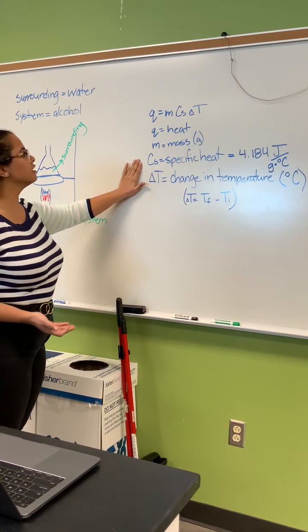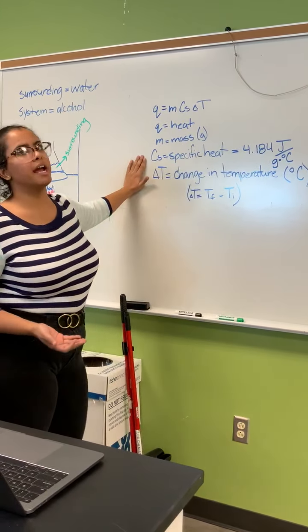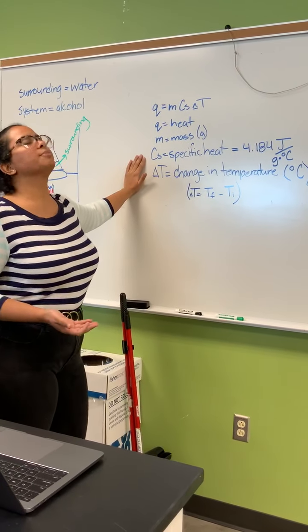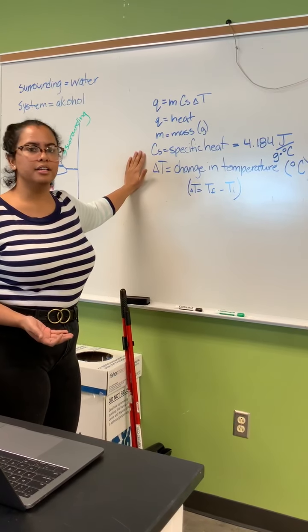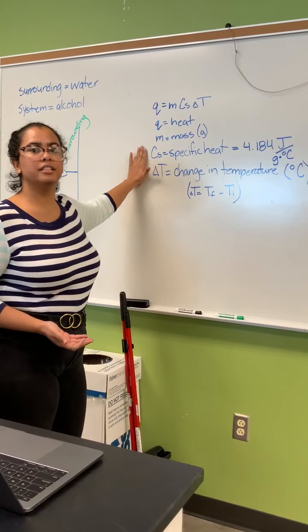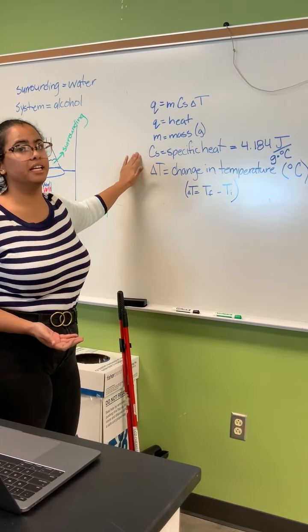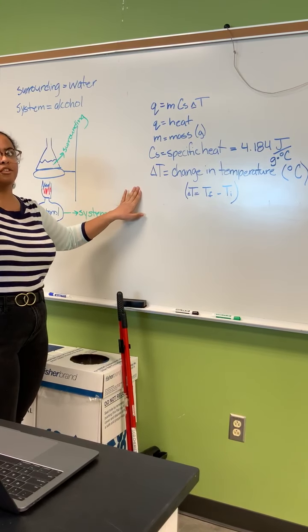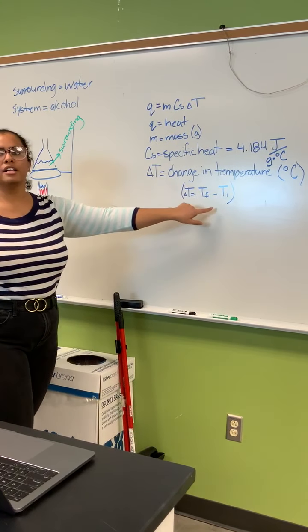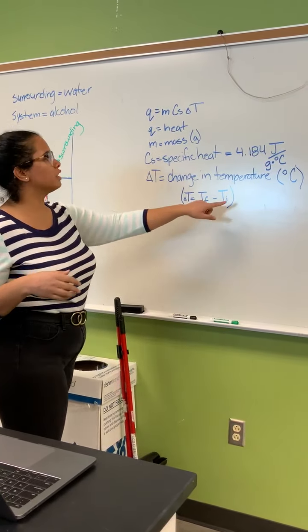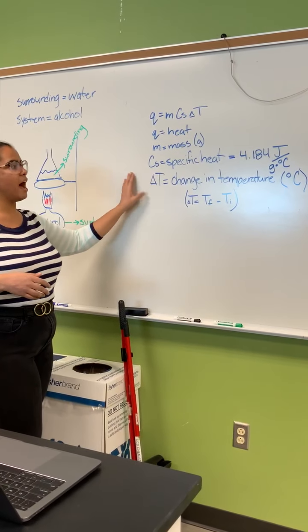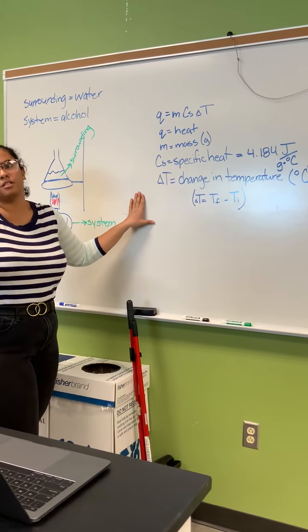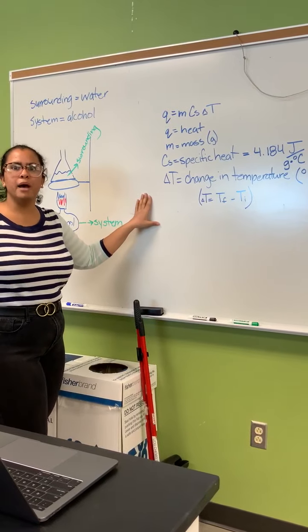Specific heat, c_s, is 4.184 joules per gram degrees Celsius - that is the specific heat of the water. And then we have a change in temperature. You have your final temperature minus your initial temperature and that will give you change in temperature. It has to be in degrees Celsius because that's what our thermometer measures.